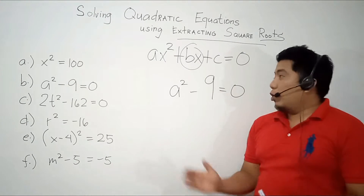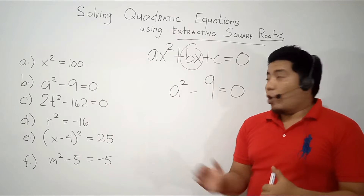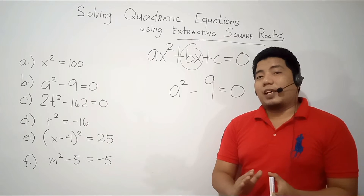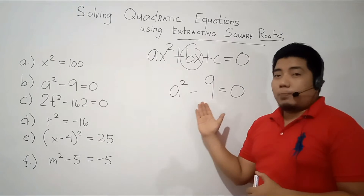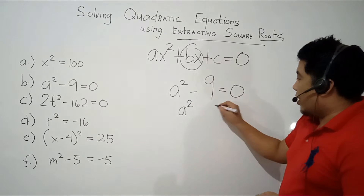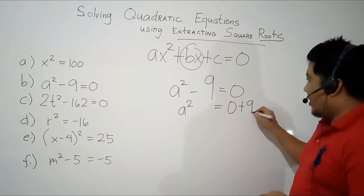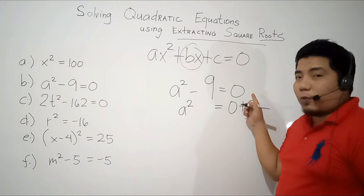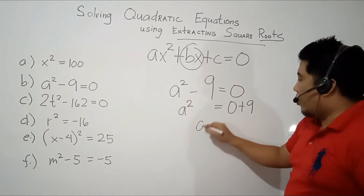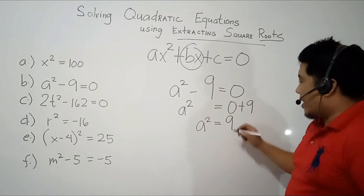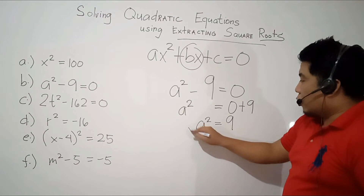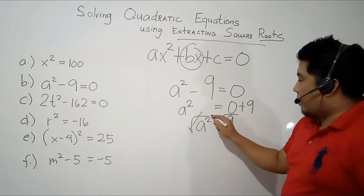For our next example, we have a² - 9 = 0. We cannot directly apply extracting square root because the variable is not yet isolated. Therefore, we need to transpose the negative 9 to the right side of the equation. By doing so, this becomes a² = 0 + 9. Because when negative 9 is transposed to the other side, the negative becomes positive. So we have a² = 9. Since this is already isolated, we can now apply extracting square root — square root both sides — and that will be canceled, giving us the answer 3.